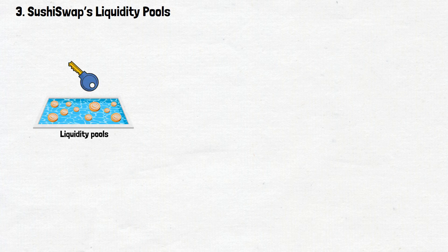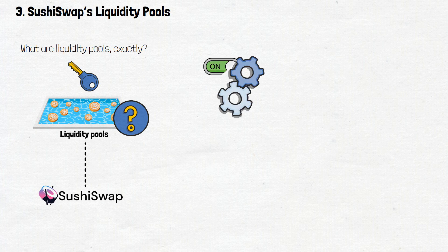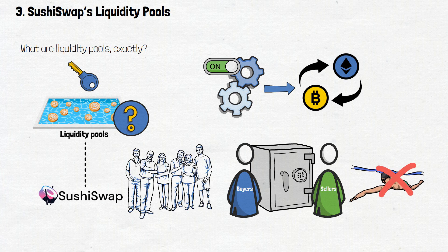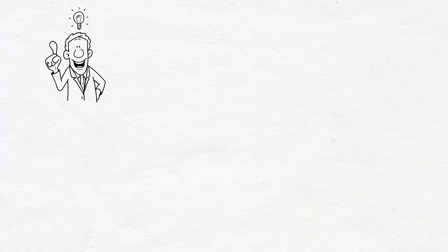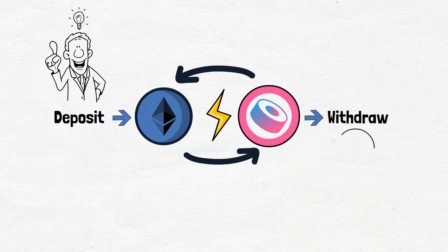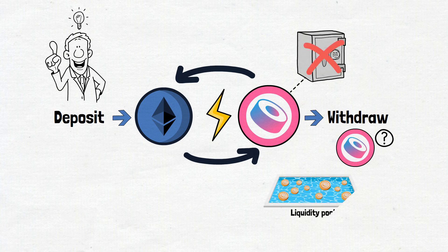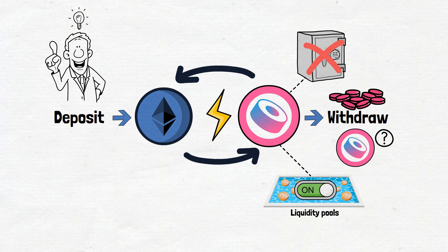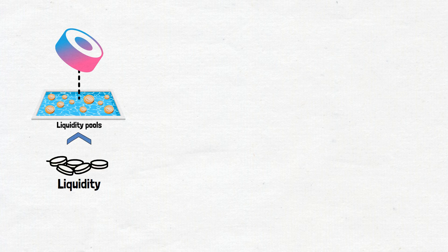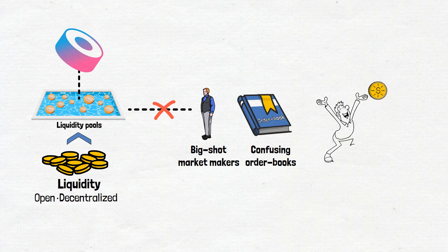Let's talk about those liquidity pools. Liquidity pools are a key component of most DEXs, and SushiSwap is no exception. They're a mechanism designed to enable crypto swapping by working as a reserve for buyers and sellers — more like a group fund where people toss in their assets. To illustrate: imagine you wanted to swap Ethereum for SushiSwap tokens. You'd deposit your ETH, but how could you instantly withdraw your Sushi if there wasn't a reserve of Sushi already in place? That's where liquidity pools come in — they enable the platform to send you the funds you bought. SushiSwap uses these pools to collect liquidity in a way that's open and decentralized, with no need for big-shot market makers or confusing order books.